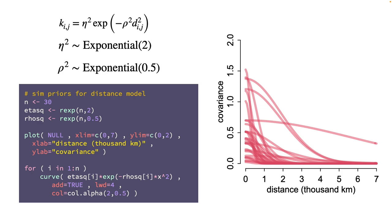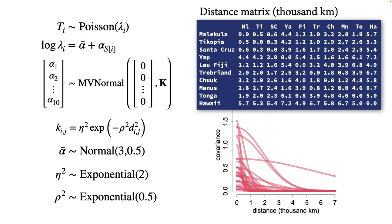Here's a little code to simulate draws from the prior distribution of covariance functions implied by these two priors for eta-squared and rho-squared. You can see they imply lots of different covariance functions — some with quite high covariances sustaining over long distances, others that are very low and flat, some that decline very rapidly with space. What these priors don't say is that it's plausible to have extremely high covariance over many thousands of kilometers of ocean.